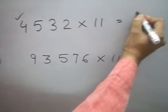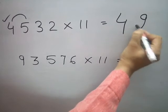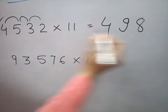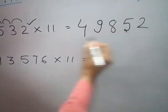4 plus 5 is 9, 5 plus 3 is 8, 3 plus 2 is 5, and last digit is 2. This is your answer.